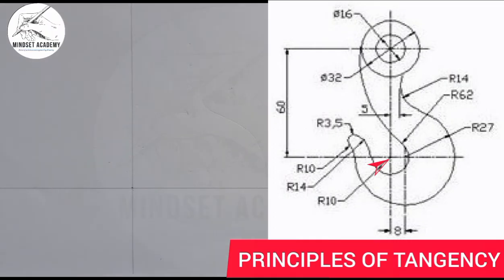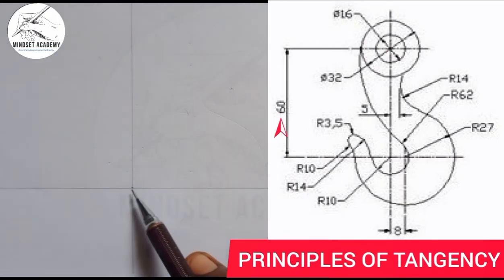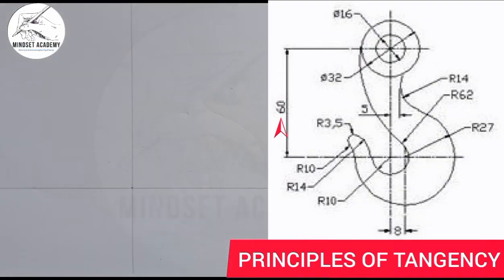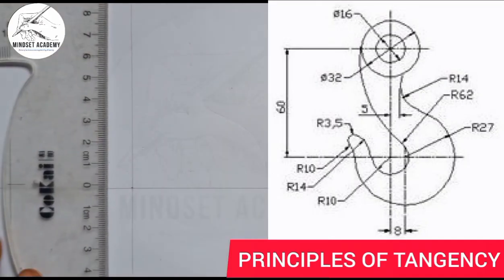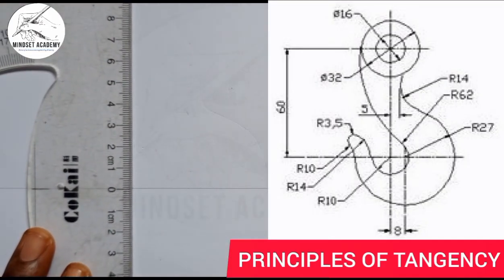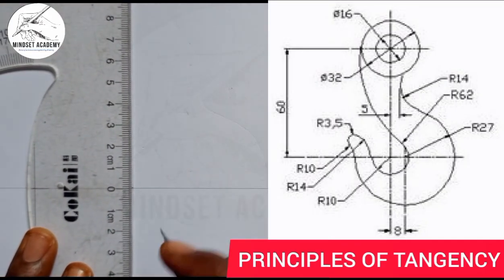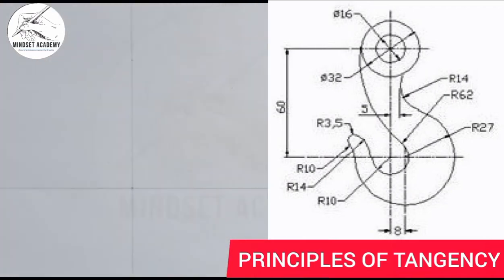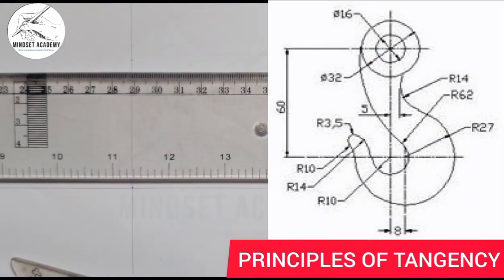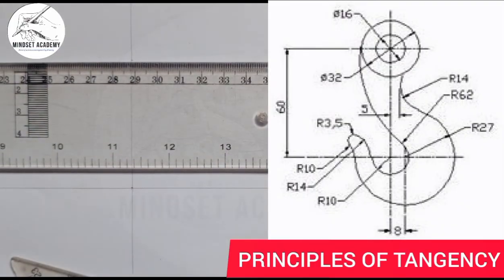From that center point to this center here is given as a distance of 60. So from here I'll measure 60 with the help of my meter rule — from zero to 60. At that point I also draw my center line this way.